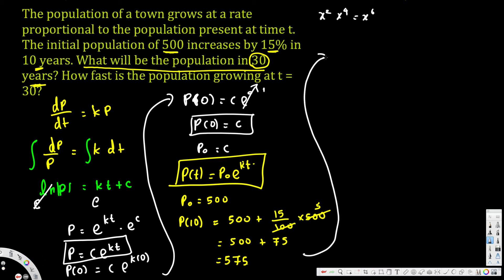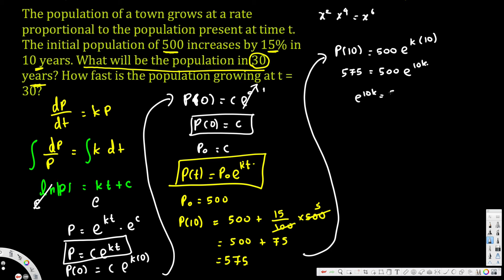We apply P(10) to the equation: P(10) = 500 · e^(k·10). Since P(10) = 575, we have 575 = 500 · e^(10k). Dividing both sides by 500 gives e^(10k) = 575/500.